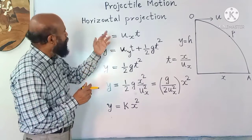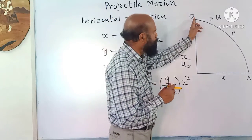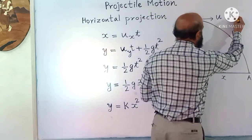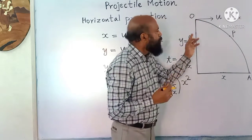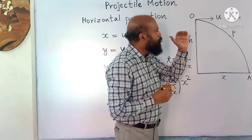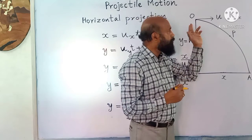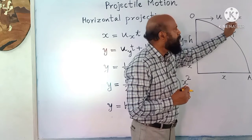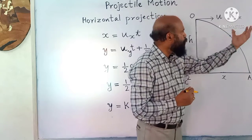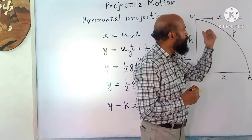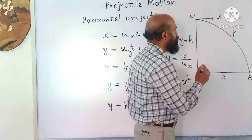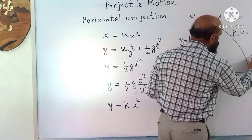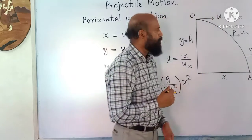First let us see horizontal projection. Here an object is thrown in the horizontal direction with an initial velocity u_x. It is moving in the horizontal direction with a uniform velocity. If you neglect air resistance, there is no force in the horizontal direction, so the horizontal velocity remains constant. When it reaches any point along the path, the horizontal velocity will still be u_x.